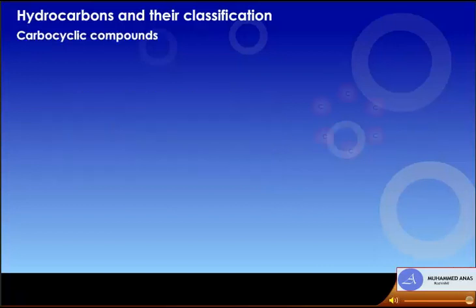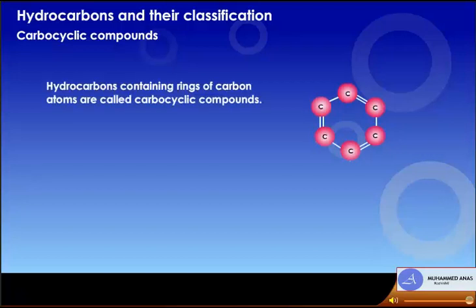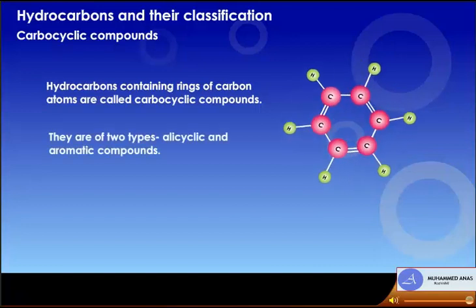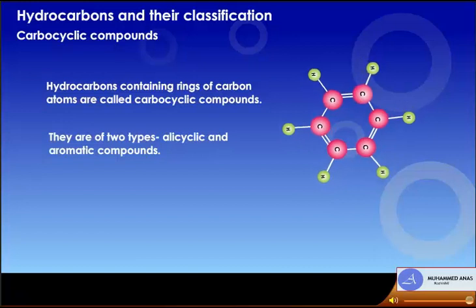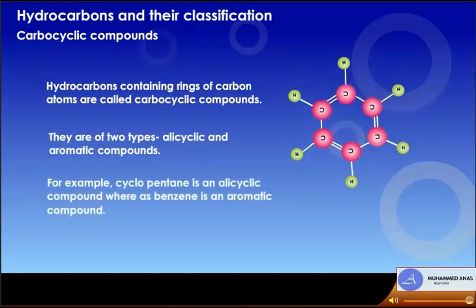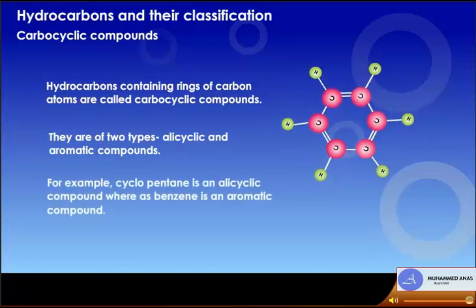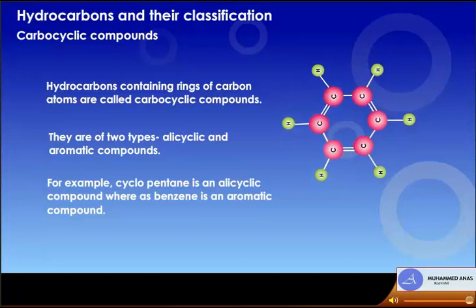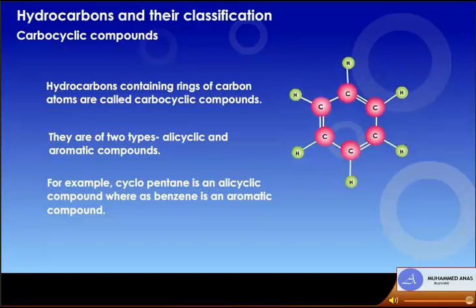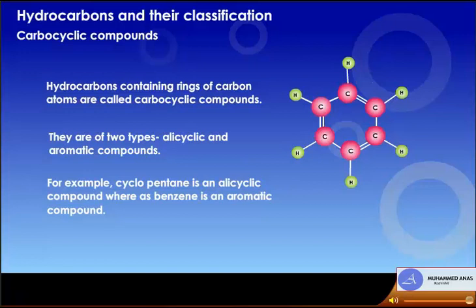Carbocyclic compounds are hydrocarbons containing rings of carbon atoms. They are of two types: alicyclic and aromatic compounds. For example, cyclopentane is an alicyclic compound, whereas benzene is an aromatic compound.